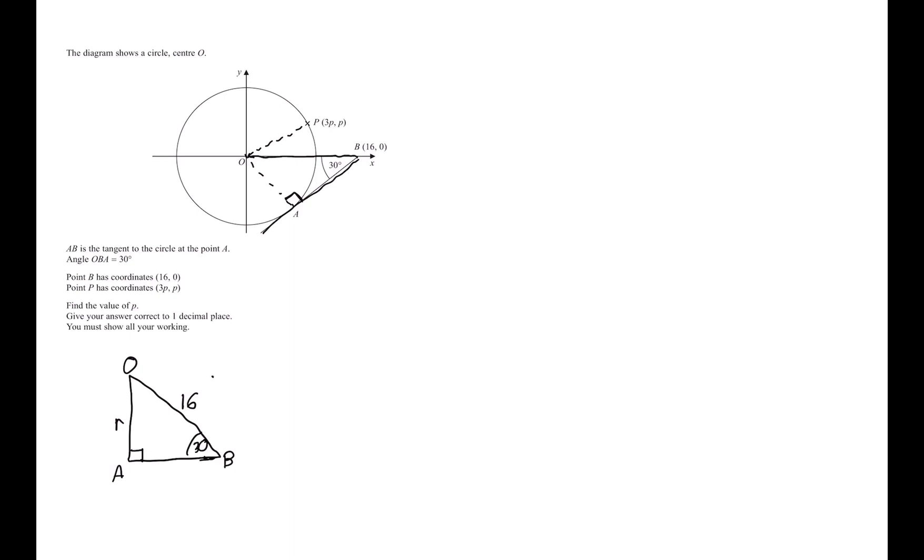So let's label our sides. We have H, the hypotenuse, being 16. We have the adjacent as A and opposite as O. Which formula do we use here? We have H and we're trying to find O, so we're going to use this formula: opposite equals sine of the angle, which is 30, multiplied by H, which is 16.